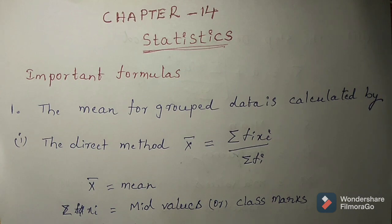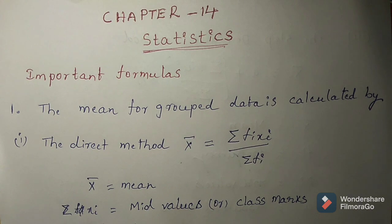Today we are going to discuss the formulas of mean in our 14th chapter, Statistics. In our chapter, you find the mean using three methods. What are they? First one is the direct method, second one is the assumed mean method, and third one is the step deviation method.